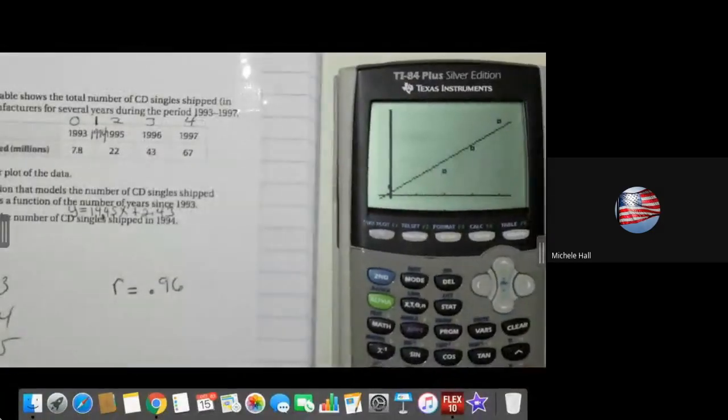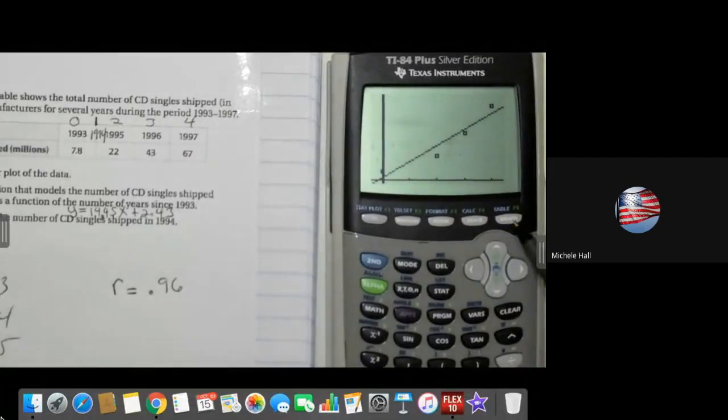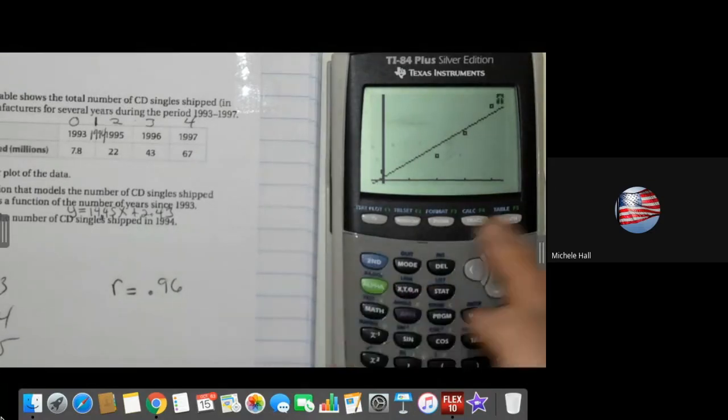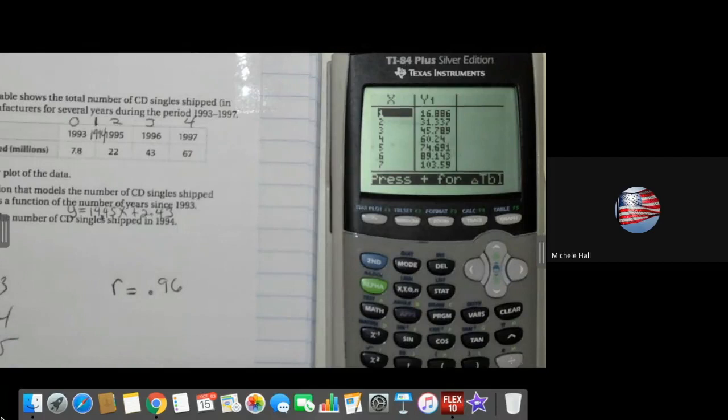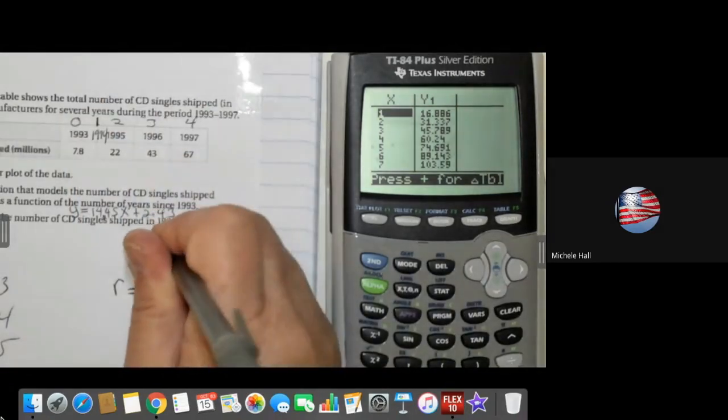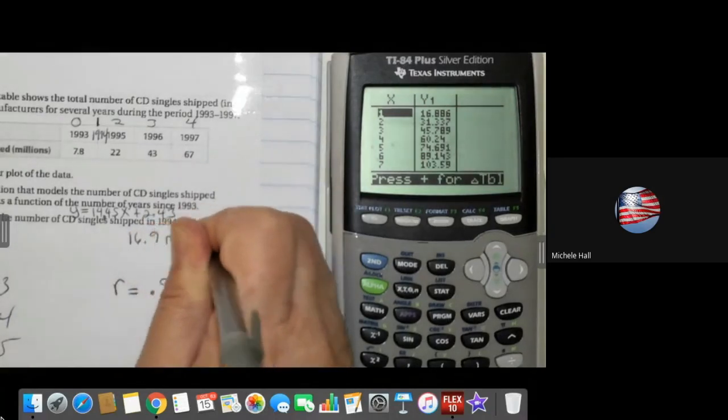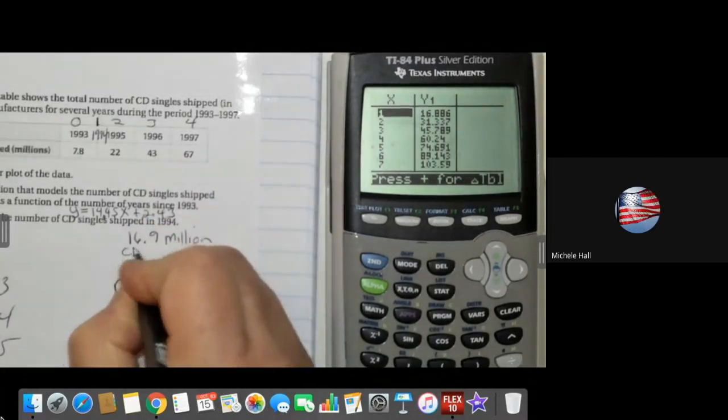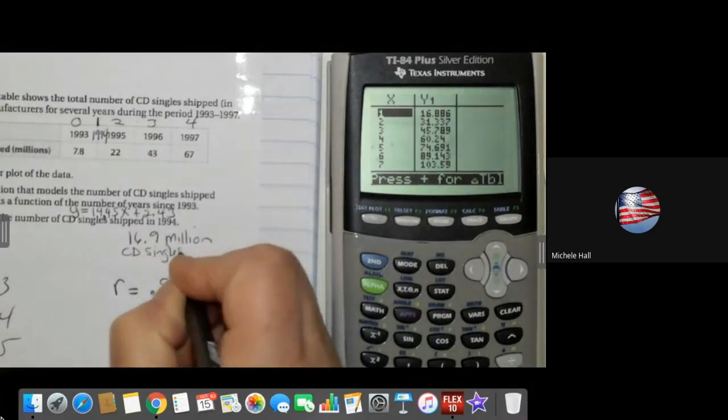I can look at my table of values. Right here above graph there's a table there that has all our x and y values in it in blue. So I would hit second, and there's my table of values. It tells you what 1 is. What if I wanted to know? Okay, so 1 is 16. What kind of answers do they have? One decimal place. So I'm going to say 16.9, 16.9 million CD singles shipped.